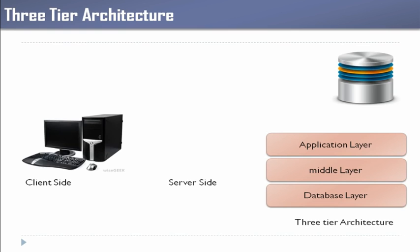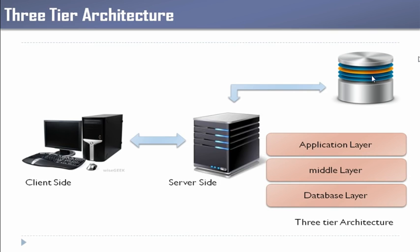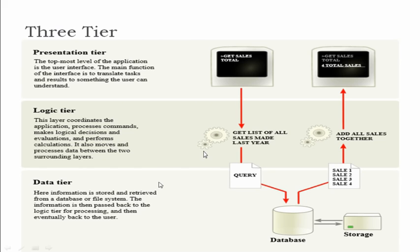In three-tier database architecture there are three parties involved: the application layer, which represents our application; the database layer, which is the actual database server; and one more party called the middle layer or server side. A real example of this is when you develop a website — you need a web server to host that website. On this machine as a web server, you also install a database server on another machine, so that website on the web server interacts with that database.